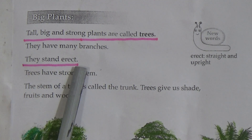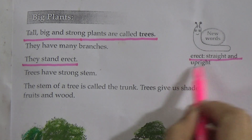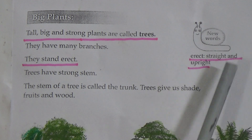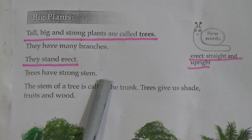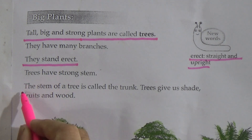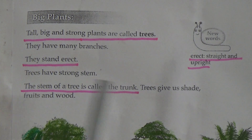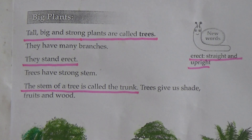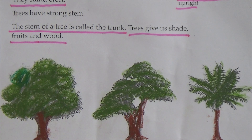What do you mean by erect? Erect means straight and upright. This is a new word: erect means straight and upright. Trees have a strong stem. The stem of a tree is called the trunk. Underline this line — this is very important. What is a trunk? The stem of a tree is called the trunk. Trees give us shade, fruits, and wood.